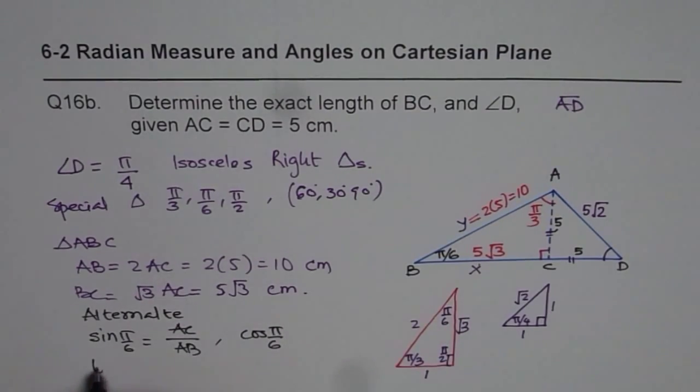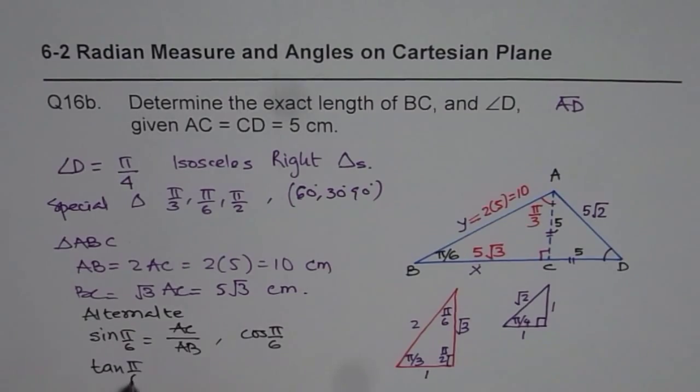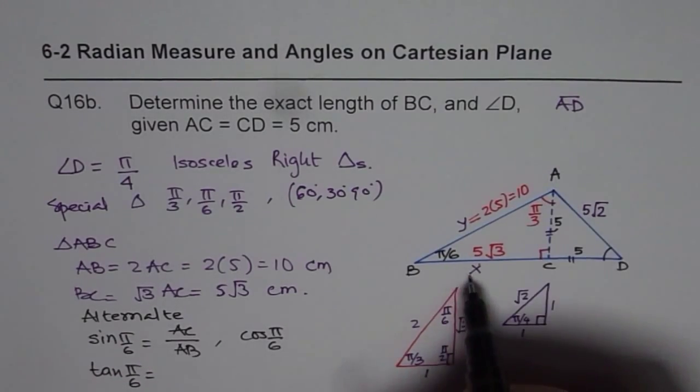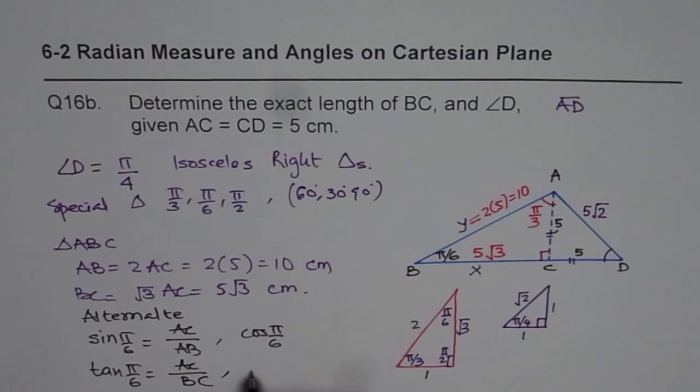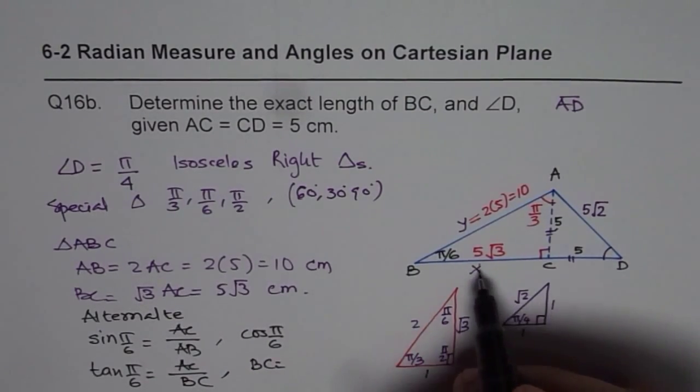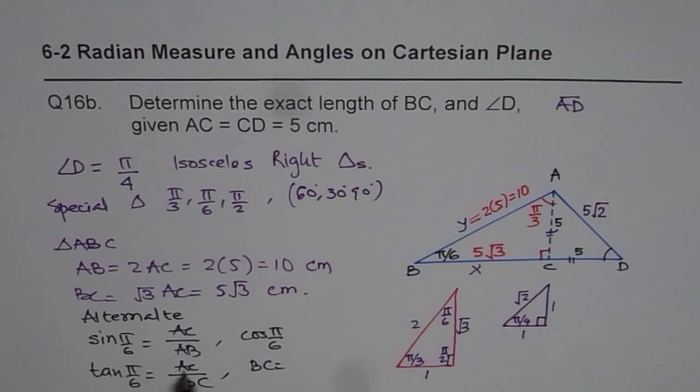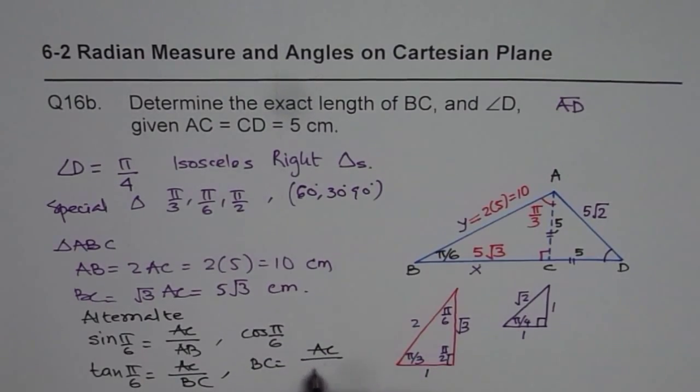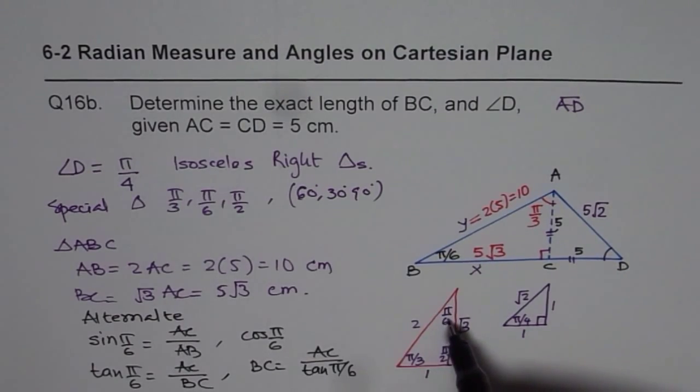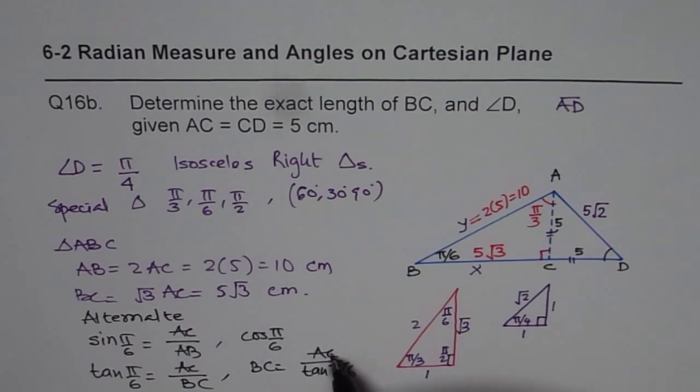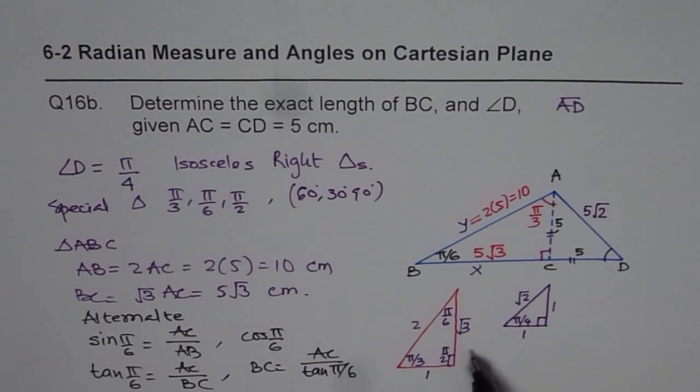Or you could use tan pi by 6. Let me write, tan pi by 6 is better to use for X, right? So which is AC over BC. So from there, you know what BC is. So BC will be equals to AC divided by tan pi by 6. And here tan pi by 6 is 1 over square root 3. And so you get the expected answer, which we calculated just by using special triangles.